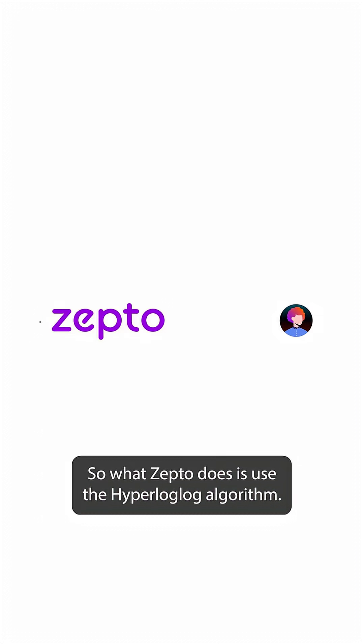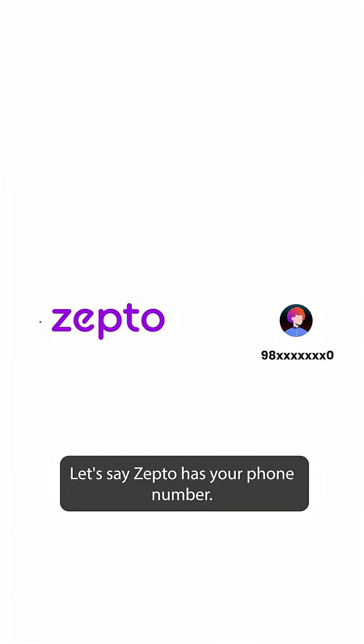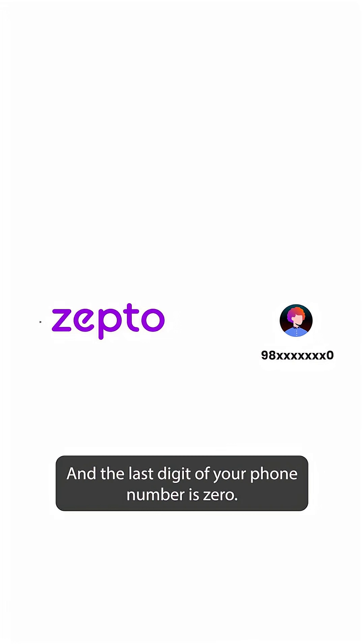So what Zepto does is use the HyperLogLog algorithm. This is an approximation algorithm which goes something like this. Let's say Zepto has your phone number and the last digit of your phone number is 0. How many people out of 10 do you expect to have the last digit as 0?